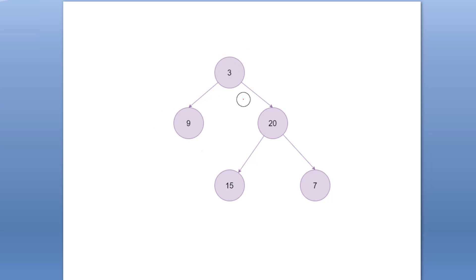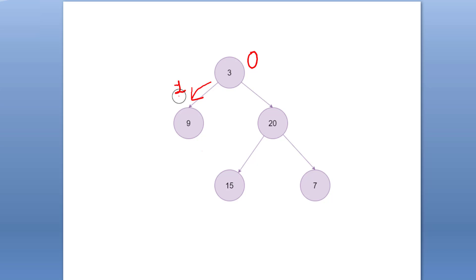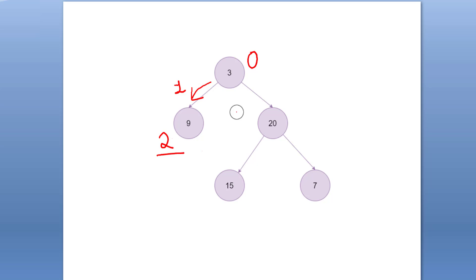For this example, we are going to start the height with a zero value. As usual, we are going to recurse the left part of the tree first. As we go deeper, our length becomes one, and since this node has no left or right node, we are going to return out of it, adding one to give a height of two.